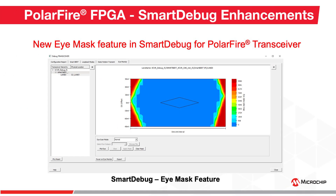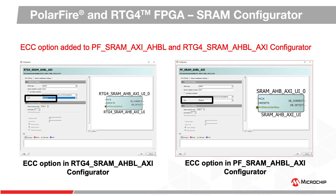Libero version 12.4 introduces a new iMask feature in the Smart Debug tool for PolarFire transceivers. This iMask feature will provide the best DC and offset values for the transceiver eye.